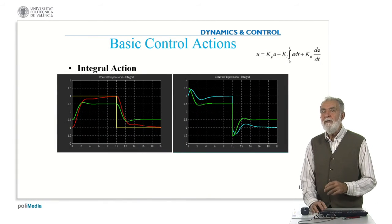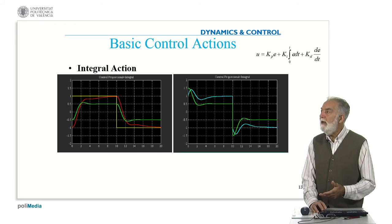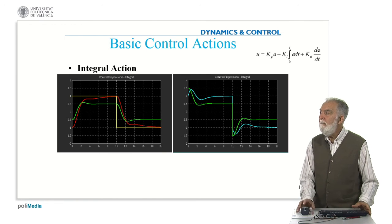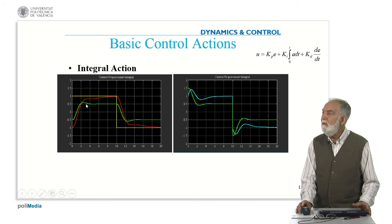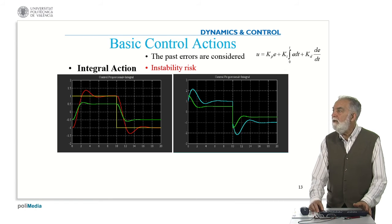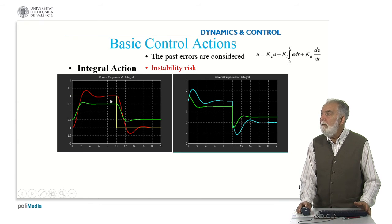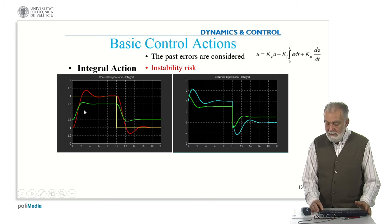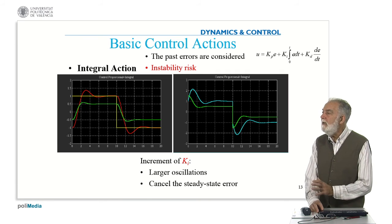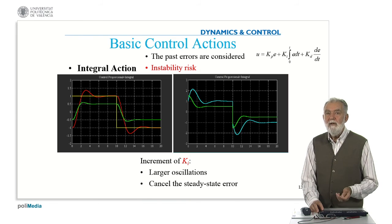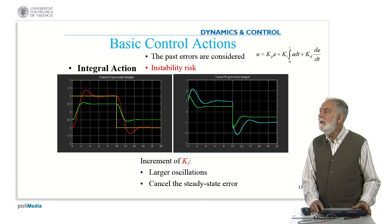In order to reduce the error in steady state, we can introduce the integral action. The integral action means the control is proportional to the error and also to the accumulated error. You can see the response of the proportional action alone, and then introducing the integral action reduces the steady state error. However, if we increment the integral action too much, we get oscillations and the system may become unstable. So incrementing K sub I may produce larger oscillations, but the good news is it cancels the steady state error.